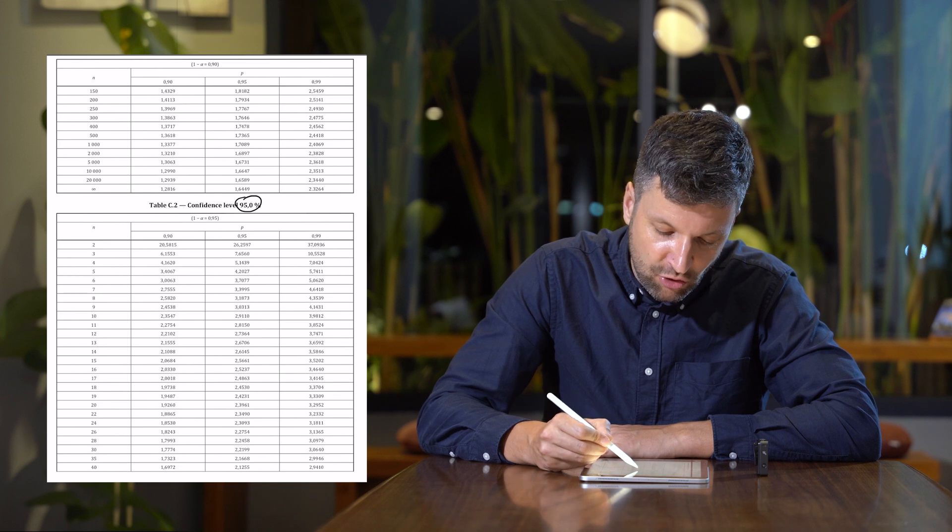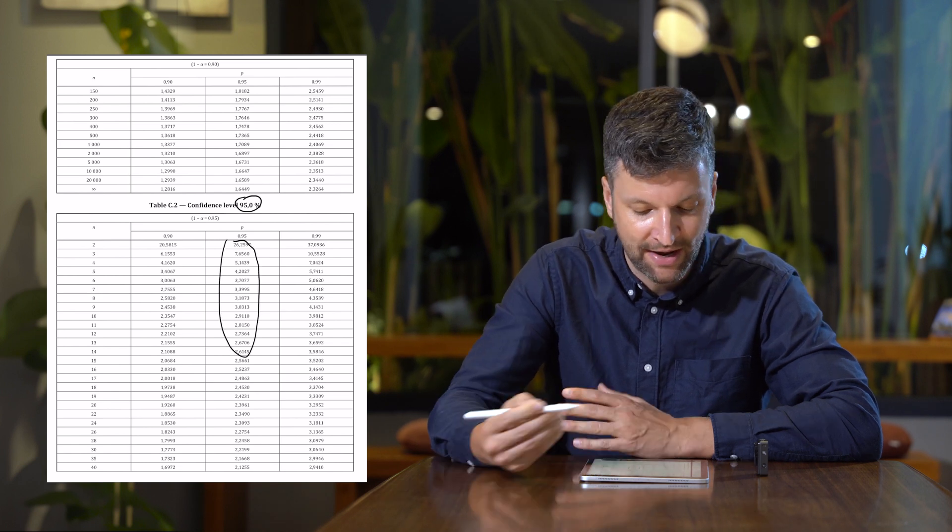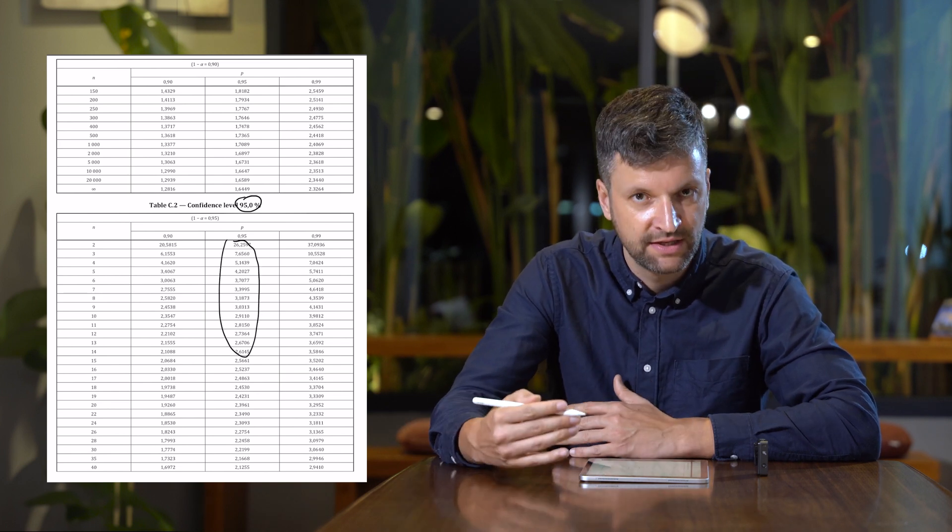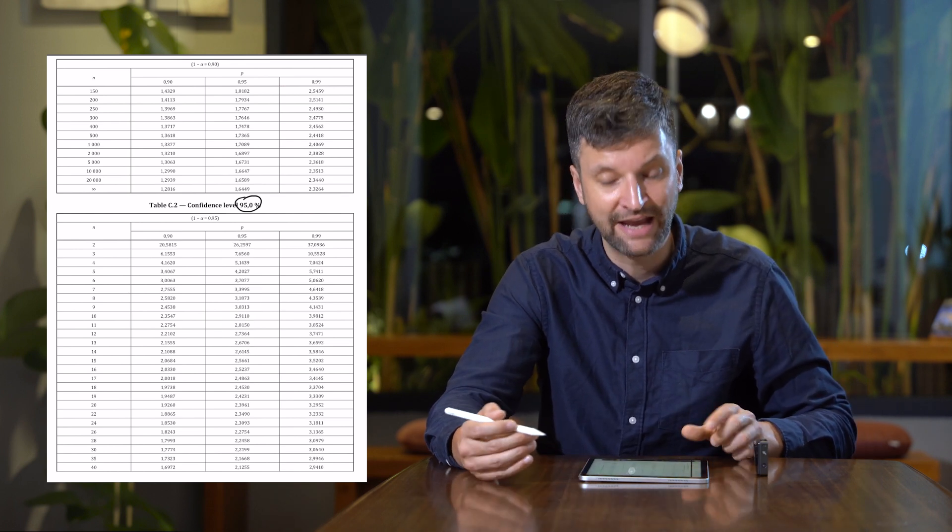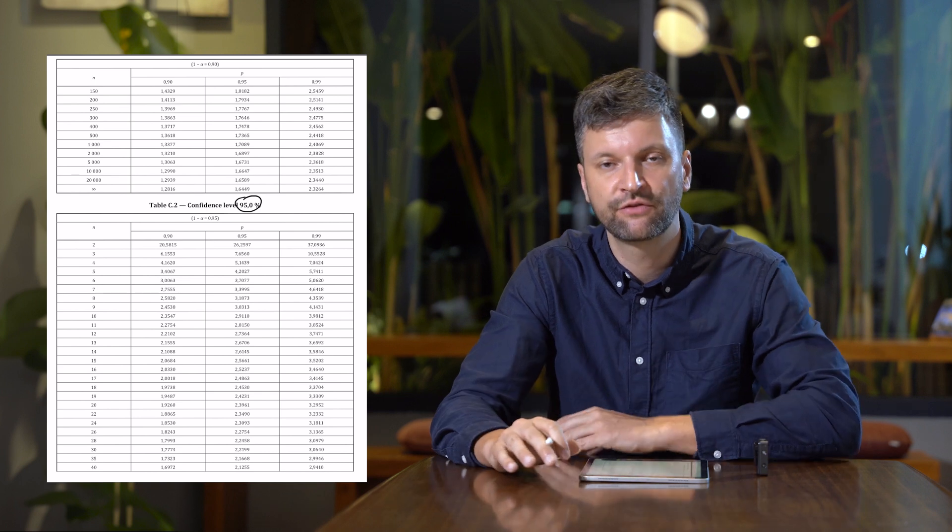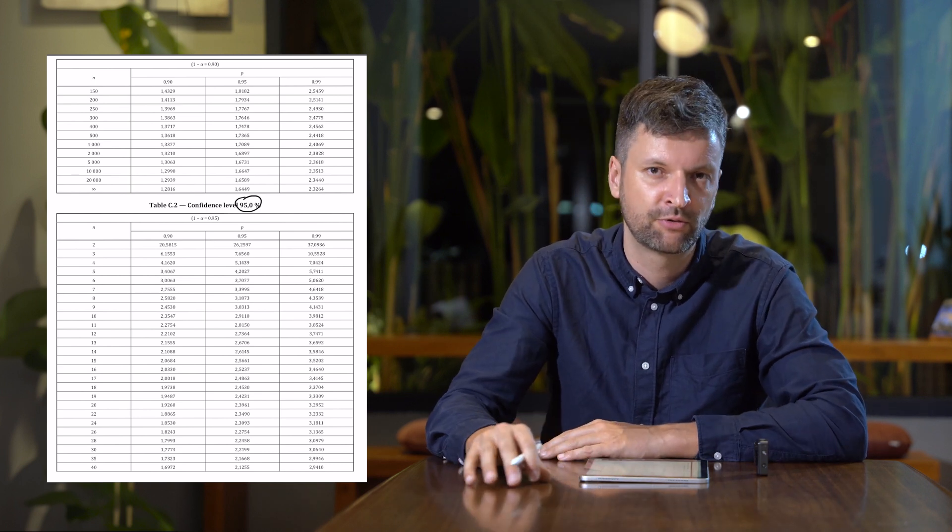And when we then look into the table, we see a bunch of random numbers. These random numbers are a so-called K-factor that is used to then calculate the tolerance interval.